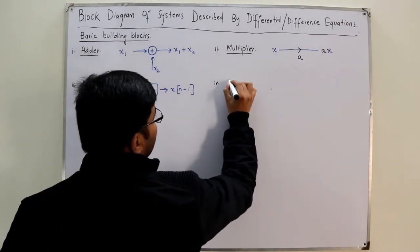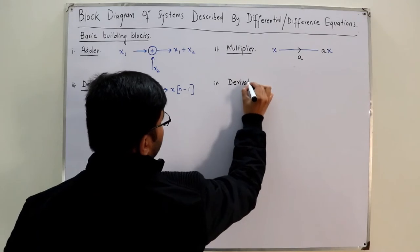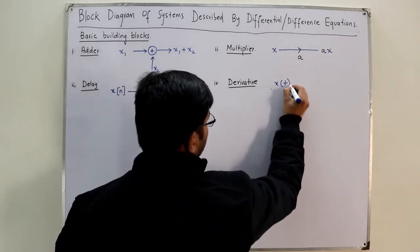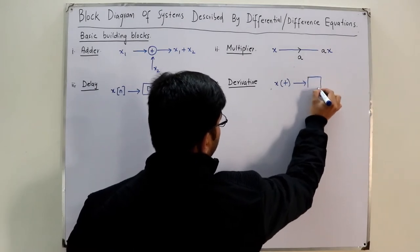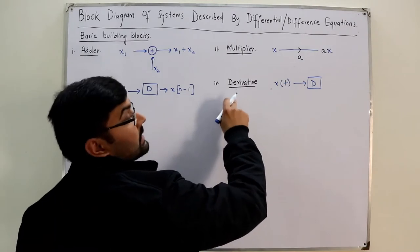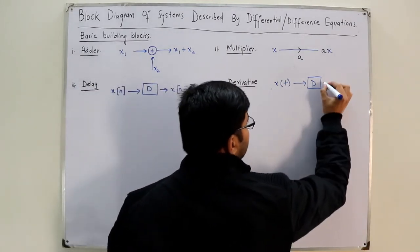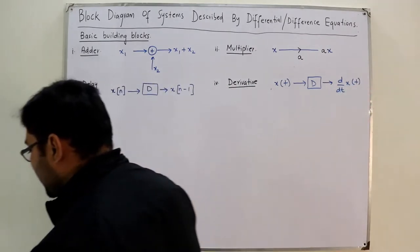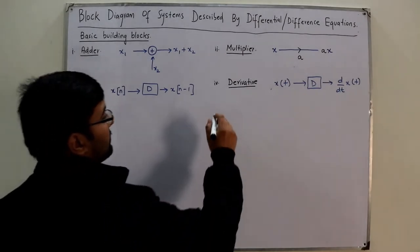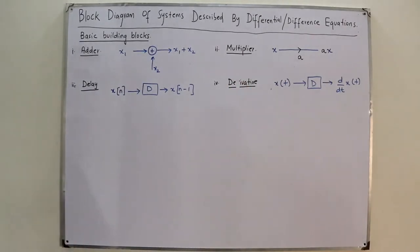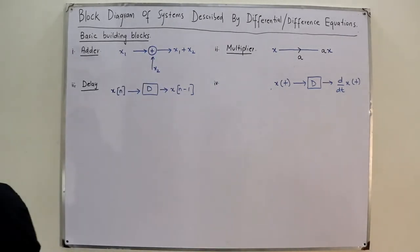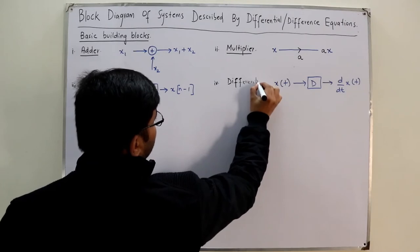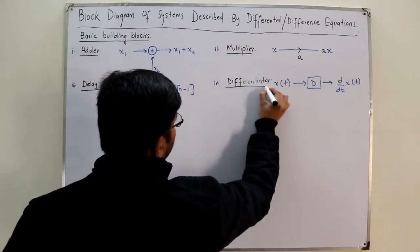In the continuous time case, instead of a delay we have the differentiator. The differentiator is also represented by a block labeled D. You give it x(t) and at the output you get the derivative of x(t). This is the differentiator block — please note it is a differentiator, not just a derivative.